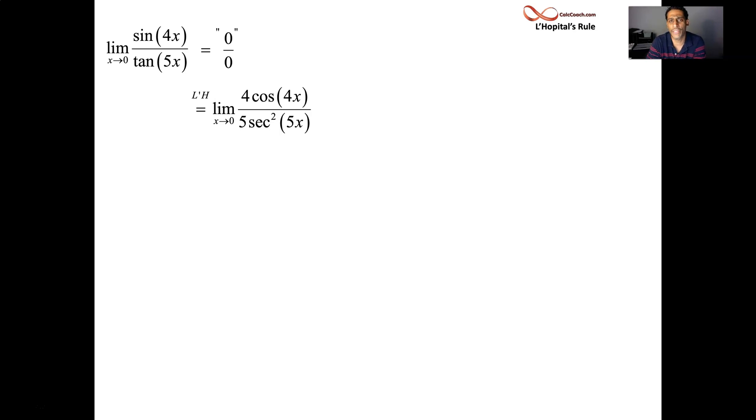It says that those two limits are the same. The cosine of 0 is a 1. The secant of 0 is also a 1. The answer to this limit is 4/5. You've executed your second L'Hôpital Rule example. A little higher level of difficulty, but not much going on here.